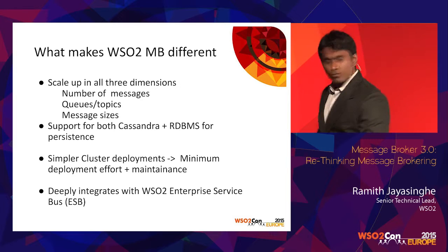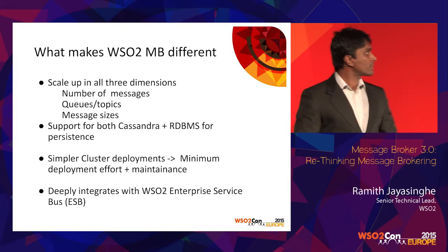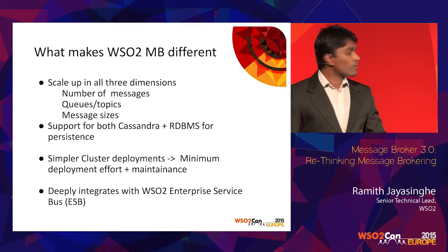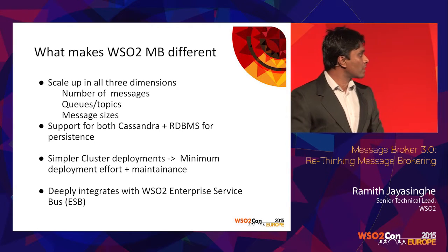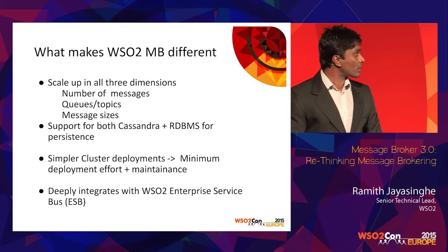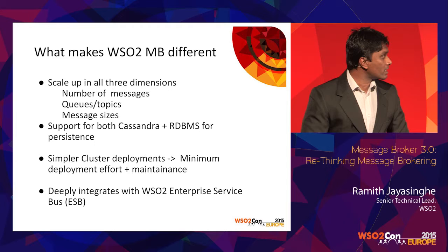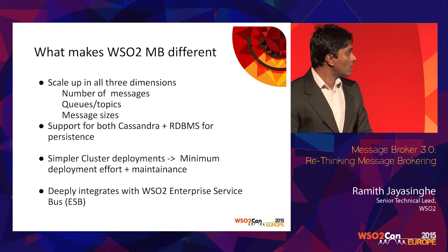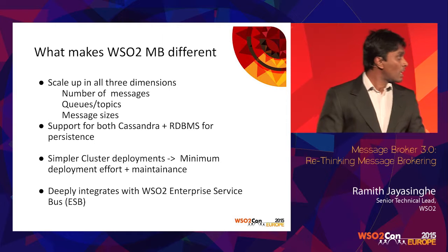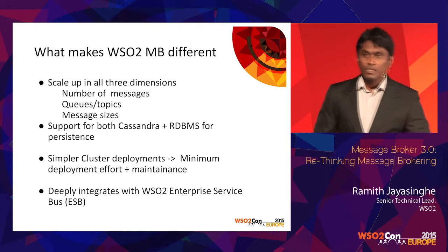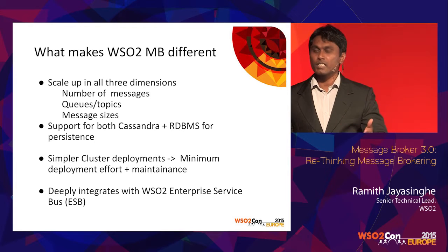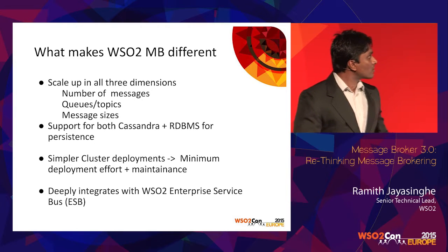What makes the WSO2 message broker different is that we scale in all three dimensions: we can handle lots of load, scale horizontally, handle large numbers of topics and queues, and handle large message sizes — because we don't transmit messages through the network and congest it. We also support both Cassandra and relational databases, which is unique. We simplify cluster deployments, reducing deployment effort, learning curve, and maintenance. Additionally, we deeply integrate with WSO2 ESB — you can install the full MB feature on top of ESB and get augmented capabilities.